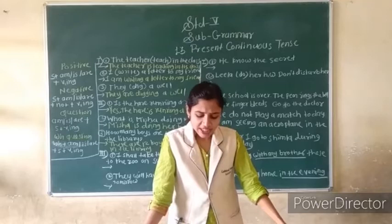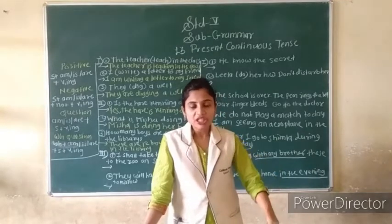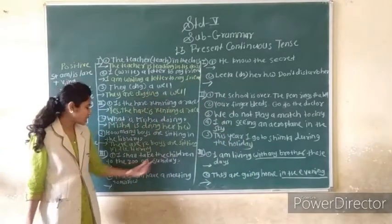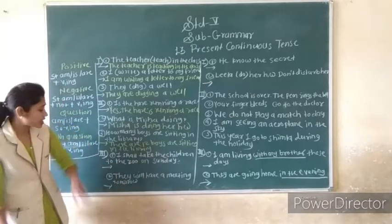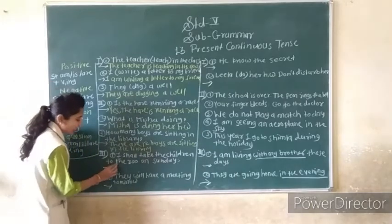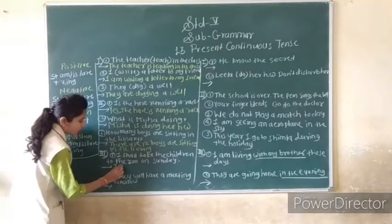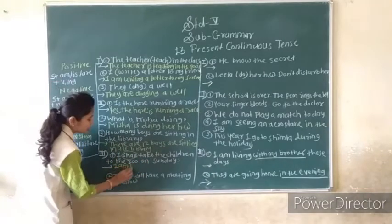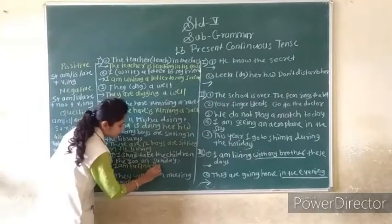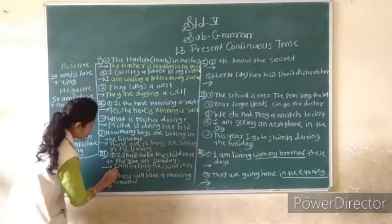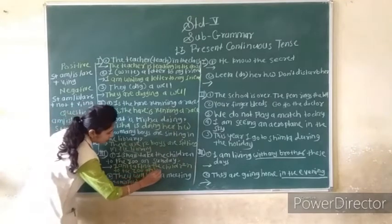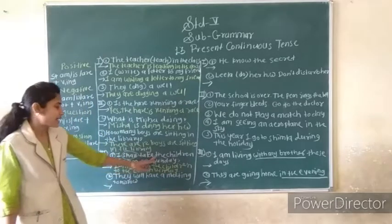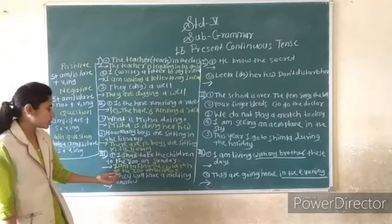Now third question: Put the sentences from simple future tense into present continuous tense. Whatever is given in the simple future tense, you are writing it in the present continuous tense. Example: I shall take my children to the zoo on Sunday. Remove 'shall' and add 'am' after subject, then use verb+ing. Answer: I am taking the children to the zoo on Sunday.